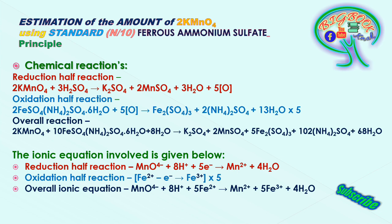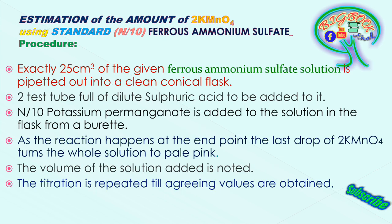Coming to the procedure, we have presented it in the simplest form. You can write this procedure in your examinations without any loss of marks. Take 25 cm³ of the given ferrous ammonium sulphate solution, which is pipetted out into a clean conical flask.